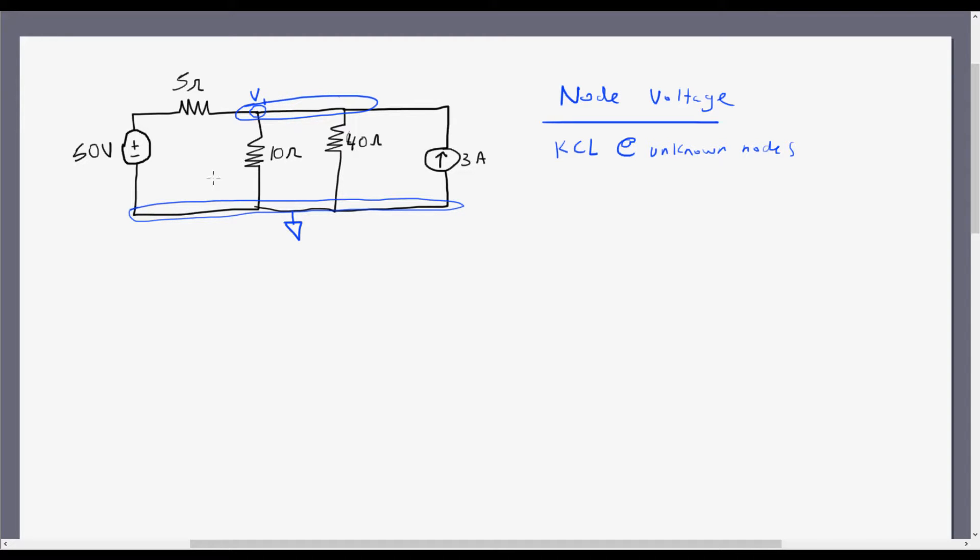So if I want to find this first current here, I'm going to use Ohm's law, which is V equals IR, or I equals V over R. So what is my V for the 5 ohm resistor? Well, it's actually going to be the drop across the resistor. The drop is also known as a change or the subtraction of voltages.